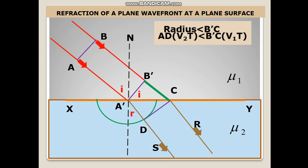So N A dash B dash is 90 minus I. As a result, we get B dash A dash C equal to I. Similarly on the other side we have R. So we have got two triangles here: A dash B dash C and A dash DC, which we will consider after some time. The velocity is V1 in medium 1 and V2 in medium 2.